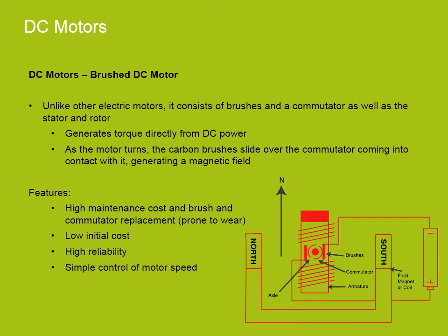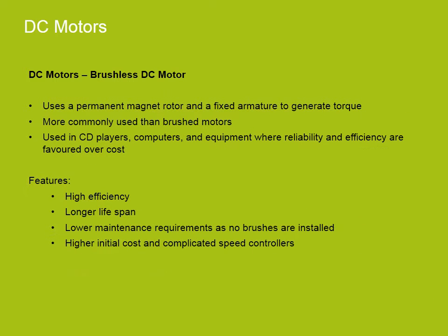Brushed DC motors are different in construction from other motors because they consist of brushes and a commutator for current switching. The motor generates the torque directly from the DC power supplied. As the motor turns, the brushes slide over the commutator and, as they come into contact with it, generate a dynamic magnetic field. Advantages of a brushed DC motor include low initial cost, high reliability and simple control of motor speed. The disadvantage is high maintenance levels, which involves regularly replacing the brushes as well as cleaning or replacing the commutator, as these are prone to wear. Brushless DC motors use a rotating permanent magnet and stationary electrical magnets on the motor housing. They are more commonly used than brushed motors due to their high efficiency and lack of brushes. They have a longer lifespan and lower maintenance costs and requirements. However, they do have higher initial costs due to their complicated speed controllers. They are used in CD players, computers and generally in equipment where reliability and efficiency are favoured over cost.